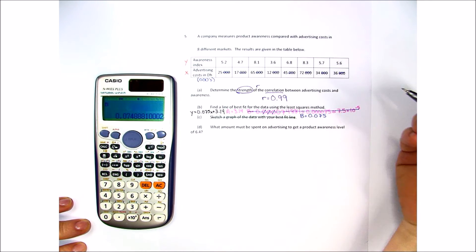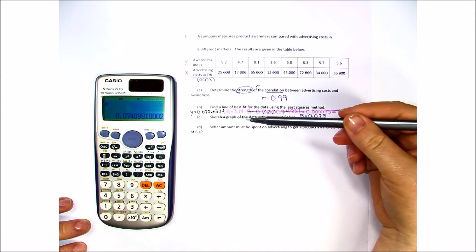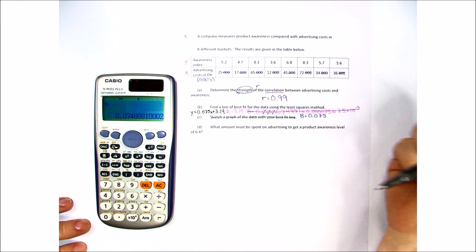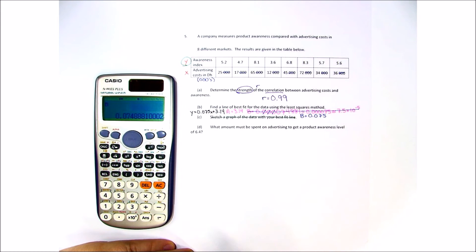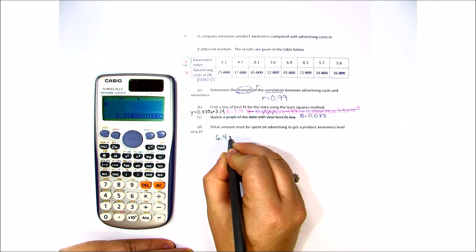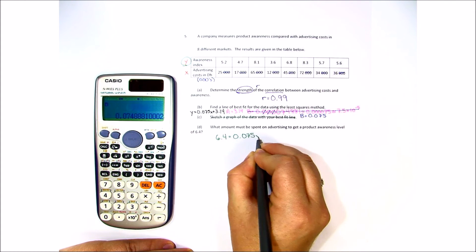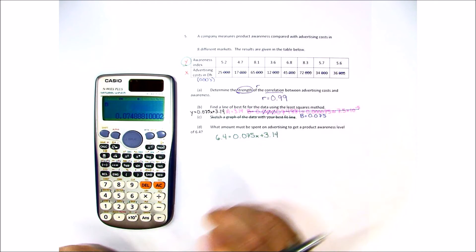The last question says what amount must be spent on advertising to get a product awareness level of 6.4. Okay, so now we're saying that we want a y of 6.4. So we're going to put that in the equation: 6.4 equals 0.075x plus 3.14.